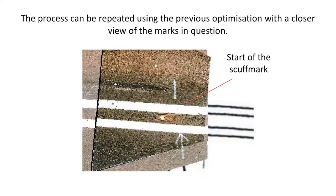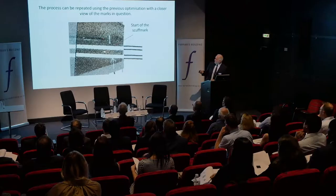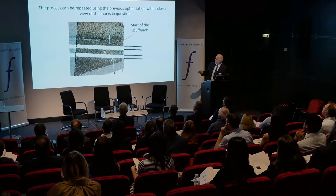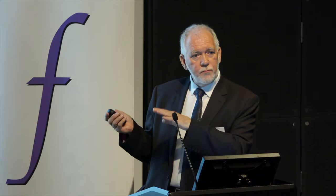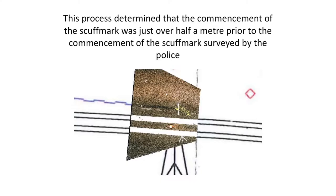This process can be repeated — in this instance, zoomed in. This area here shows where this tyre scuff mark started. Because this is rectified onto the plan, the start of that scuff mark can then be measured. The angled scuff mark was just over half a metre from the commencement of the scuff mark surveyed by the police.